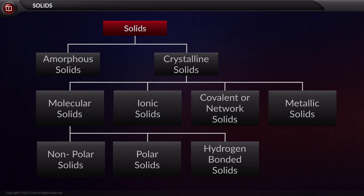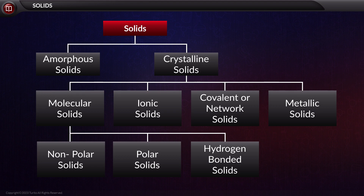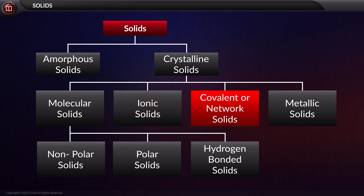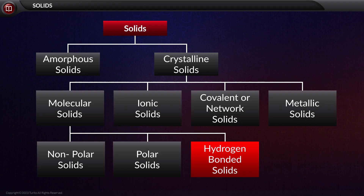In this video, we learnt about the classification of solids. Solids are broadly divided into amorphous solids and crystalline solids. Crystalline solids are again bifurcated as molecular solids, ionic solids, covalent or network solids, and metallic solids. Further, molecular solids are divided into nonpolar solids, polar solids, and hydrogen bonded solids.